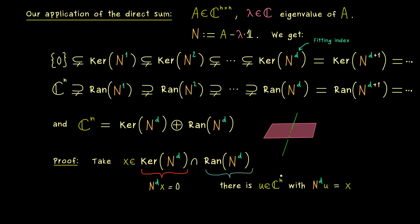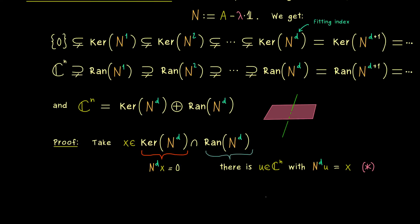And now the good thing is that this totally fits to the first equation, because we can put that x into the first equation. So let's call this one star, and let's use it on the left hand side. Hence we have N to the power d applied to N to the power d u. Therefore we can simplify that to N to the power 2d applied to u.